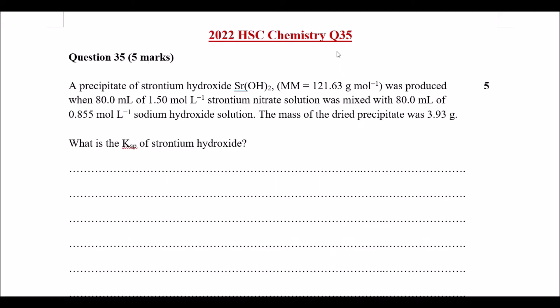Question 35. We have a precipitate of strontium hydroxide, molar mass is given. We had a concentration of 1.5 moles per liter of strontium nitrate at 80 milliliters, and also a concentration of sodium hydroxide of 0.855 moles per liter, and we produced a mass of dry precipitate, in this case the strontium hydroxide, of 3.93 grams. The question is asking us, what is the Ksp of strontium hydroxide?